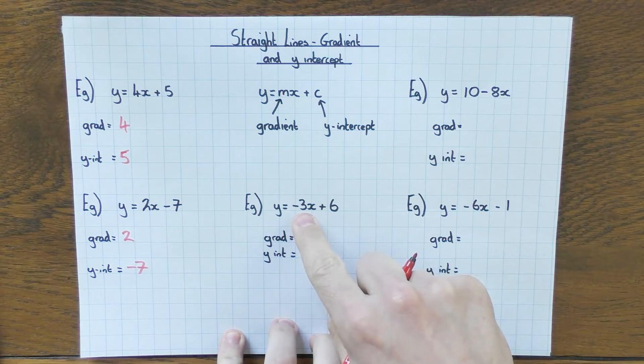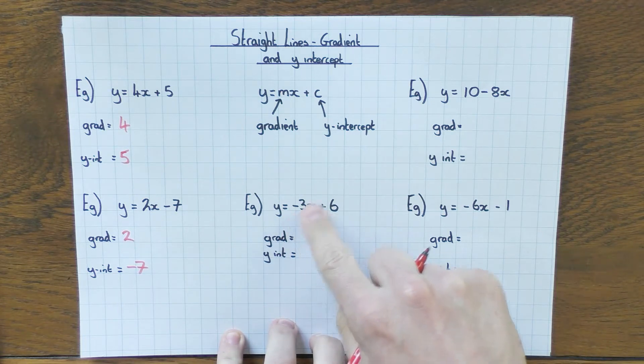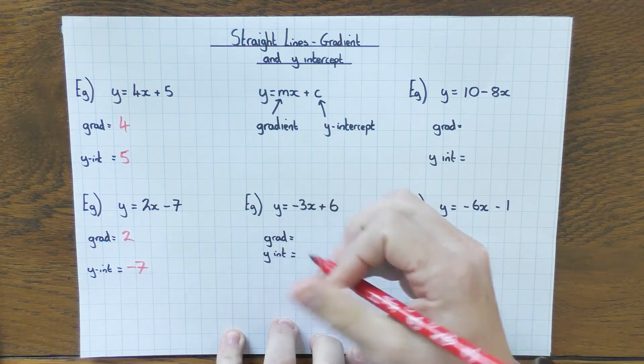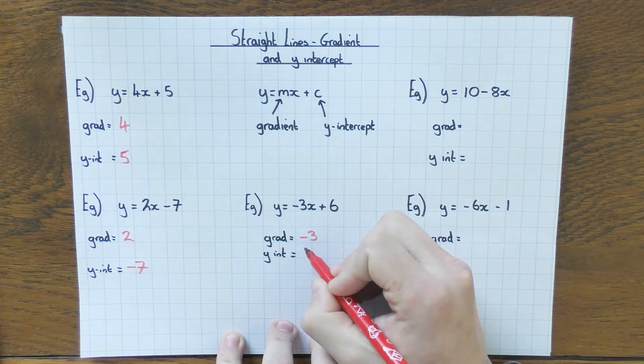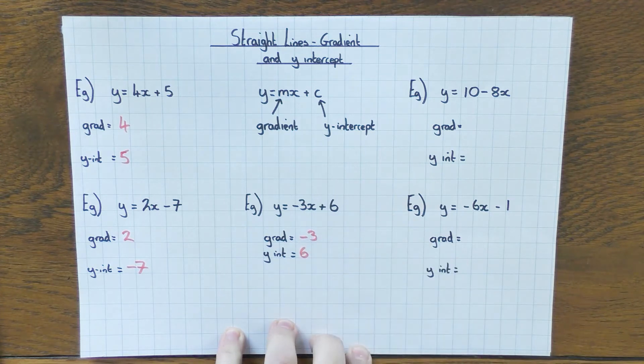This one here, y equals minus 3x plus 6. We do include that minus with the gradient. We say it's not the x, but we do include the negatives, so the gradient there would be minus 3, and the y-intercept is plus 6, or just 6.